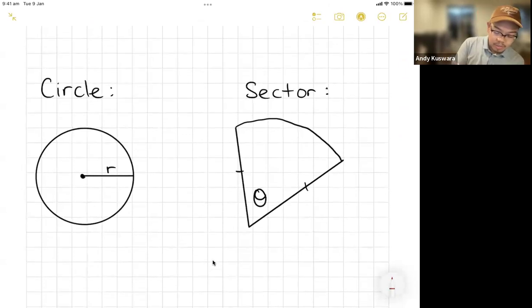If I'm talking about a circle, the area of a circle is pi radius squared. That's if you're talking about a full circle.